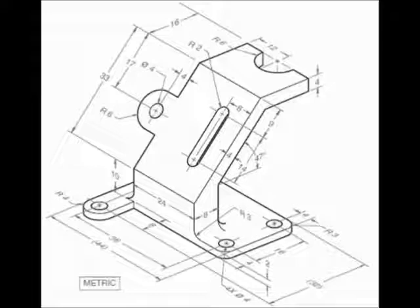Firstly we need to decide what our main view will be. The main view is determined by the view that shows the shape the best, the one that's in the natural orientation or the one with the longest base length.